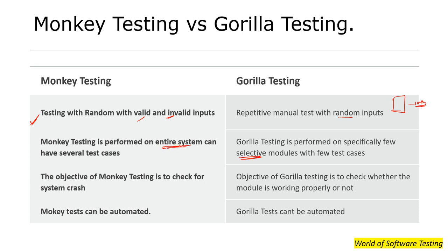The objective of monkey testing is to check for a complete system crash, while the objective of gorilla testing is to check whether the selected module is working properly or not. The monkey test can be automated, but gorilla testing cannot be automated — because we are testing a similar module in a similar manner repeatedly, it must be performed manually.